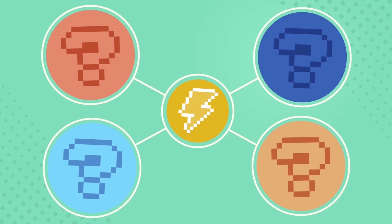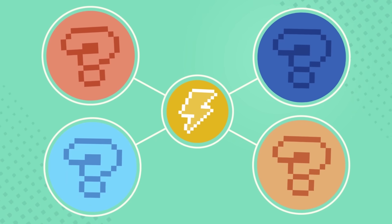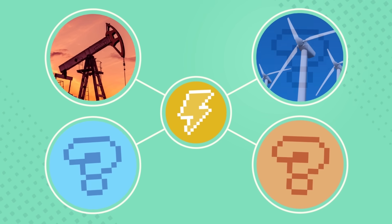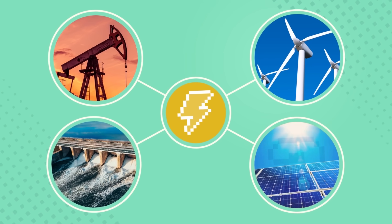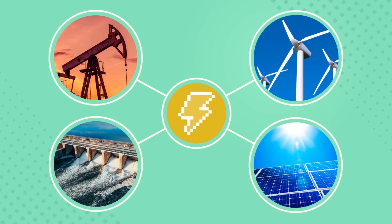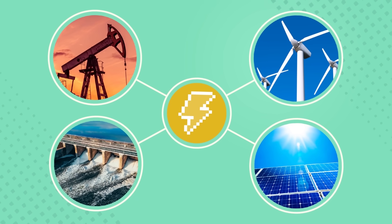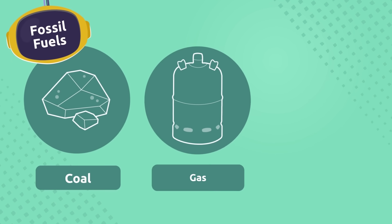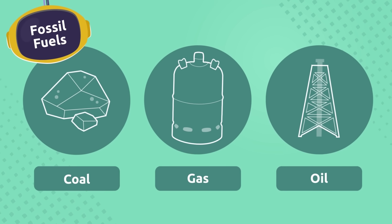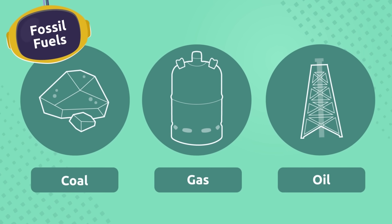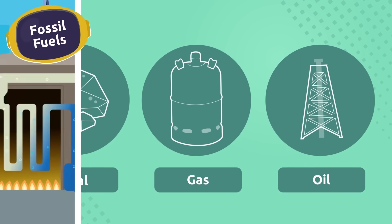We can use energy from natural resources like fossil fuels, wind, water, and the Sun to create electricity. Fossil fuels such as coal, gas, and oil are natural resources found beneath the Earth's surface.